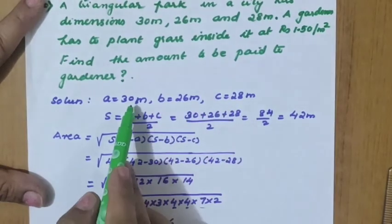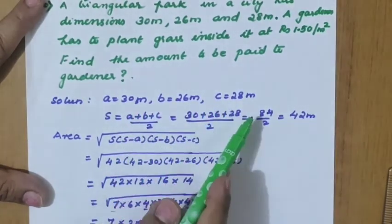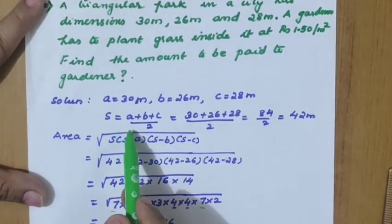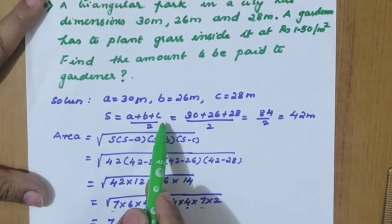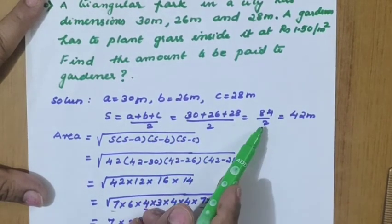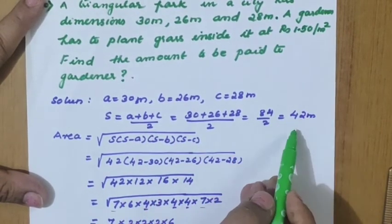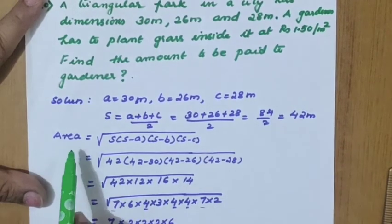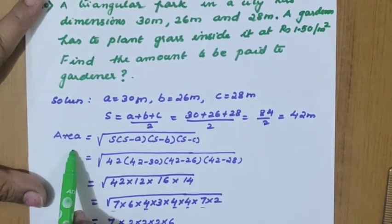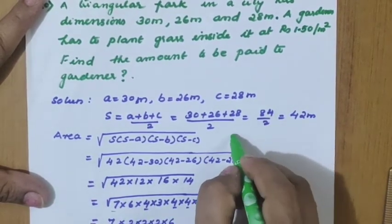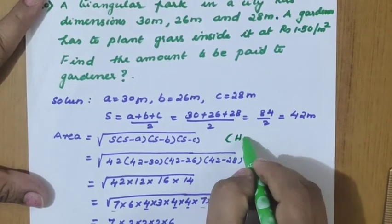Assign a, b, c as 30, 26, 28. The semi-perimeter s equals (a + b + c) / 2 — substituting, we get s equals 42 meters. Once we have s, we write Heron's formula.